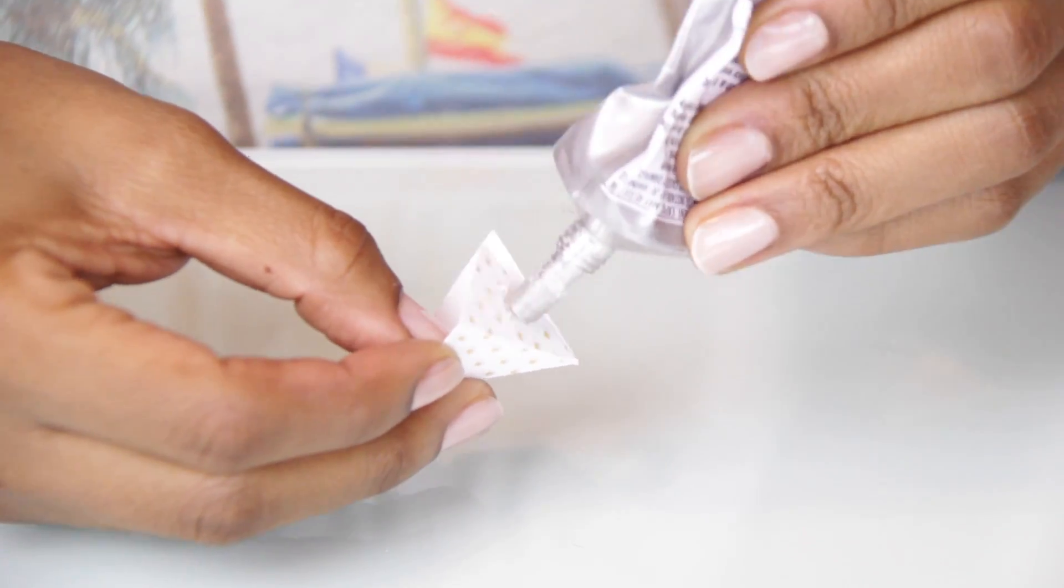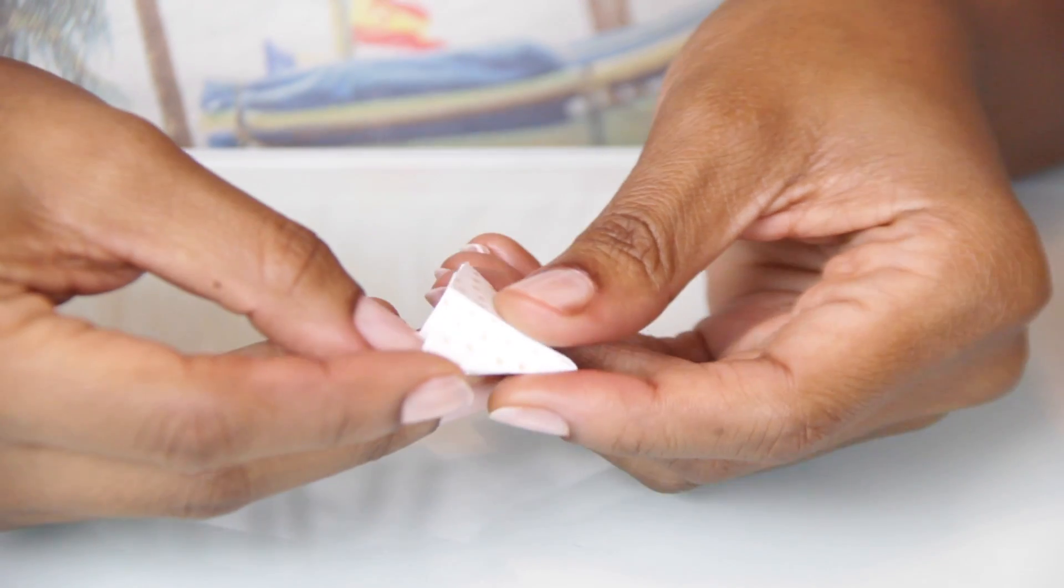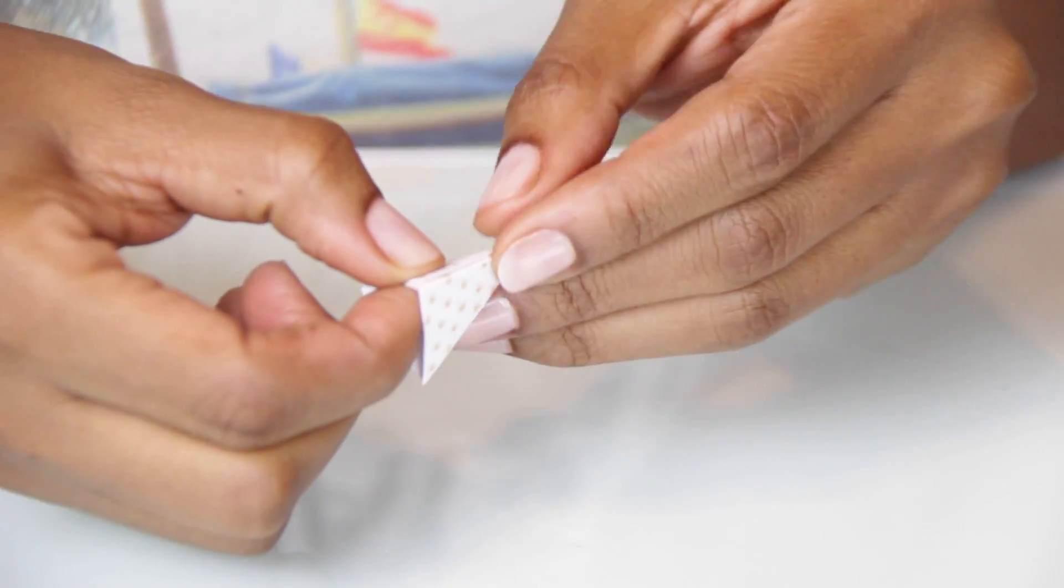Once you have all the creases folded, now you can just glue it together on one side and then that will create a three-sided cone.